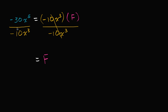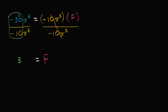On the left-hand side, we can first look at the coefficients. Negative 30 divided by negative 10 is positive three. And then x to the fifth power divided by x to the third power is going to be x squared.